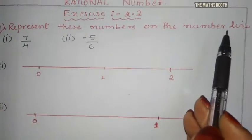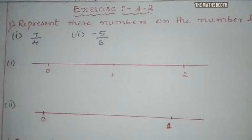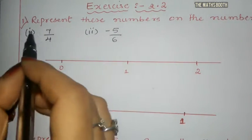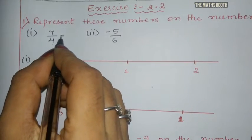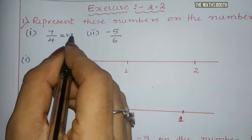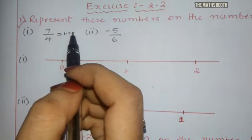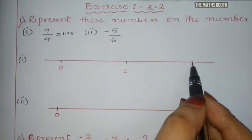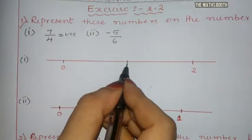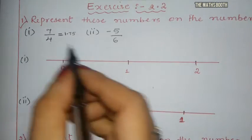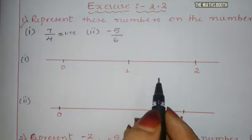Represent this number on the number line. The numbers are 7 by 4 and minus 5 by 6. First let us see 7 by 4. If we divide 7 by 4 we get 1.75. So this number comes in between 1 and 2. We have to draw a number line starting with 0, 1, 2. Our number 7 by 4 is in between 1 and 2. Now how will we represent this on the number line?